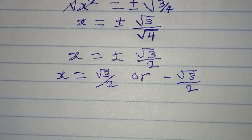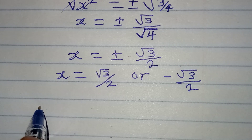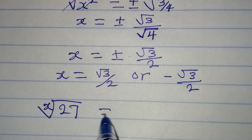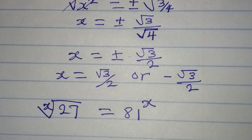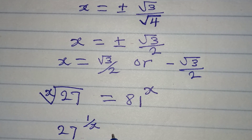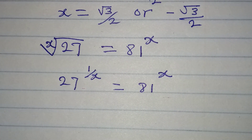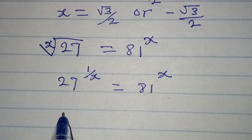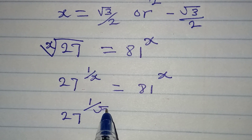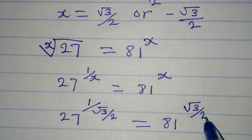The original equation is: the x-th root of 27 equals 81 to the power of x, which is the same as 27 to the power of 1 over x equals 81 to the power of x. Let's substitute x equals root 3 over 2. The left side becomes 27 to the power of 1 divided by (root 3 over 2), and the right side becomes 81 to the power of root 3 over 2.